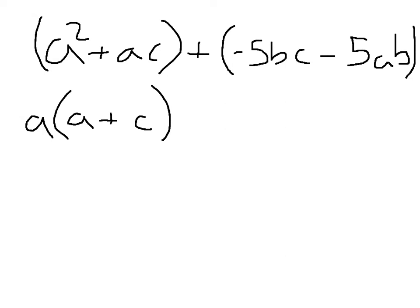And in this second term, we see that we have a negative 5b common in both terms. So we know that we can keep the plus sign there, but pull out a negative 5b. And we're left with c plus a.